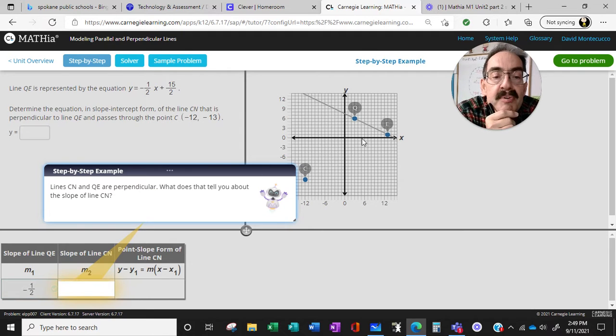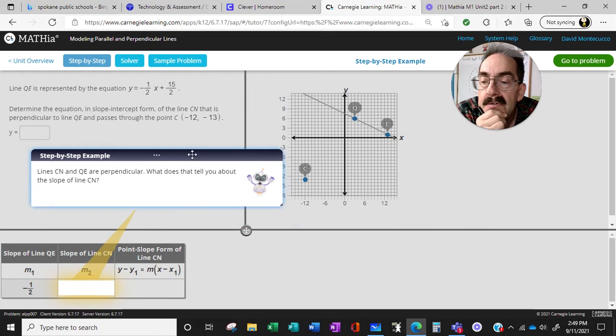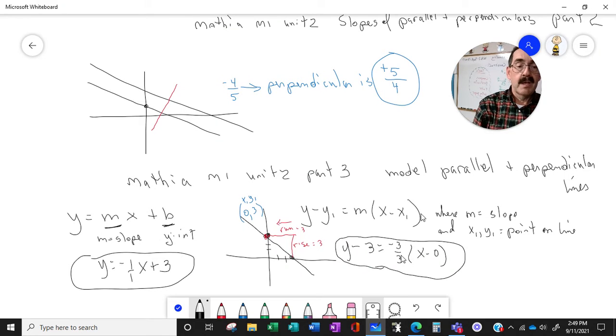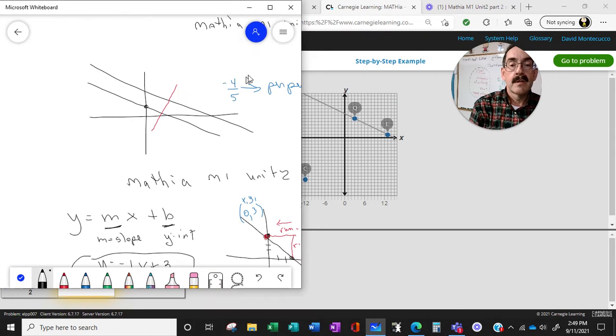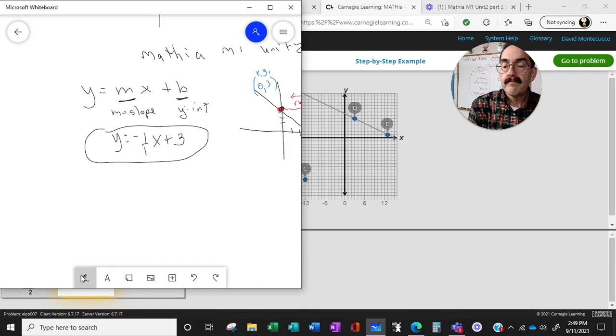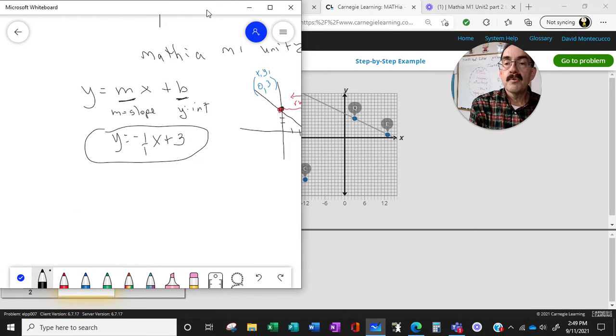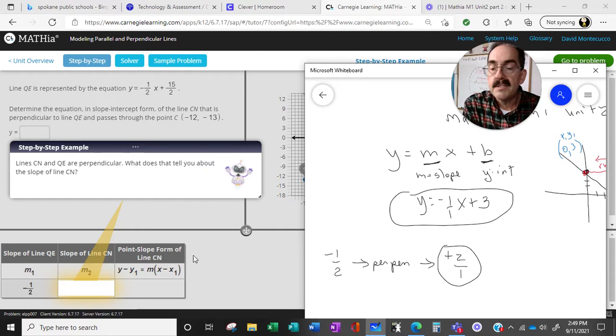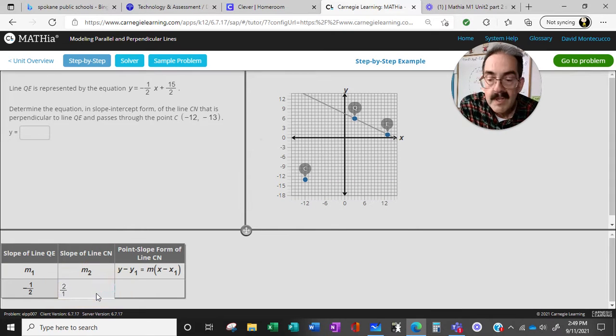Awesome. What does this tell you about the slope of CN? If CN and QE are going to be perpendicular, then a perpendicular line has to be the opposite reciprocal. So if the slope is negative 1 half, the perpendicular will become the opposite reciprocal. And we memorize that. So let's just type in 2 over 1. And we're winners.